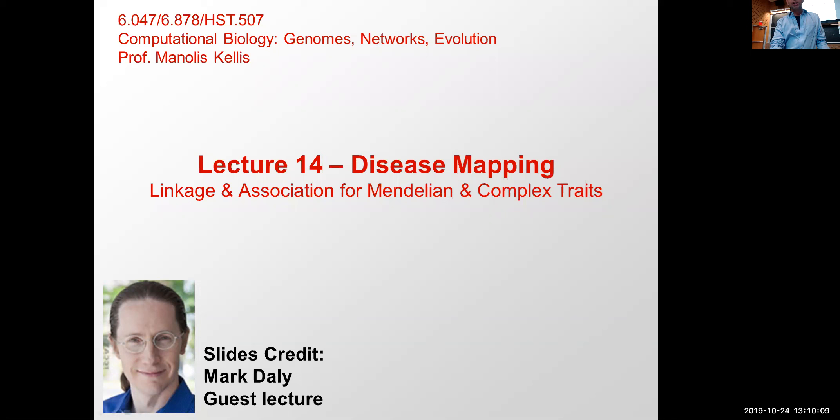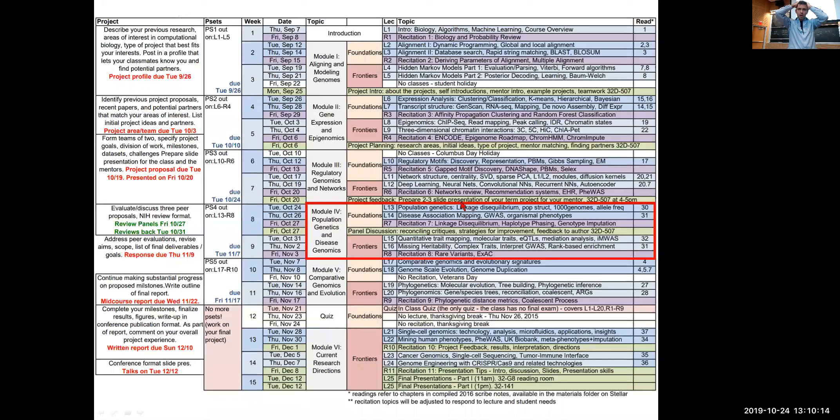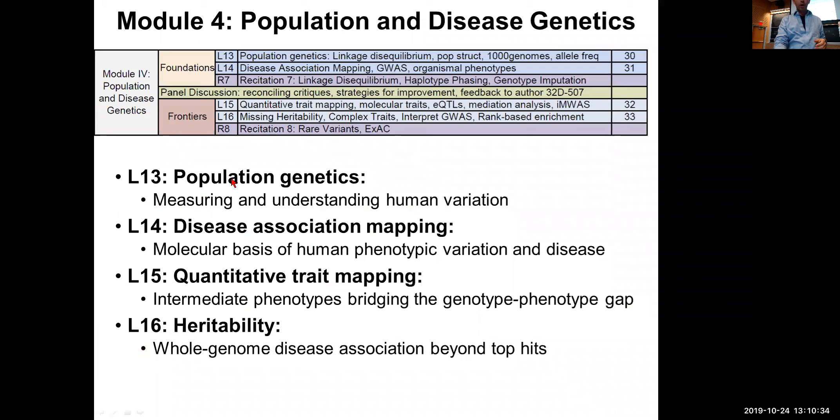Today we're going to talk about disease mapping, about linkage and association mapping for both Mendelian and complex traits. We are in the population genetics and disease genomics module. We've talked about the basics and foundations of population genetics, and today we're talking about disease-associated mapping. Next week we're talking about quantitative traits, eQTLs, heritability, and systems-level genetics.